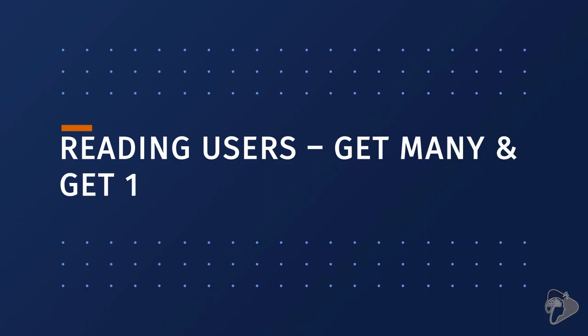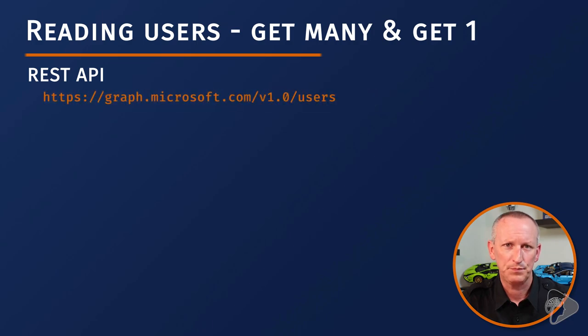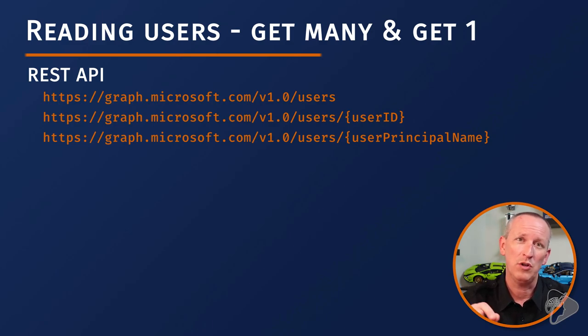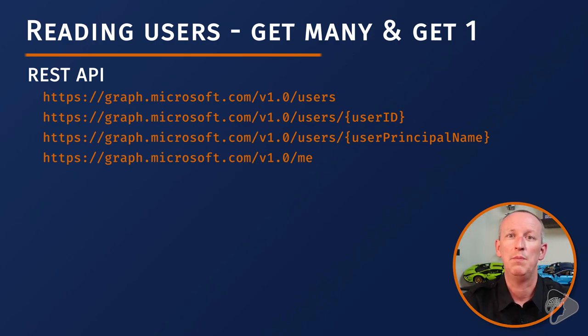This lesson, along with the next two, will be much shorter than previous lessons in this chapter. This is really just an API walk — a list of things you need to be familiar with rather than explaining how it all works. The first thing you need to be familiar with is how to get a user or a collection of users. You can obtain a list of users by submitting an HTTP GET to the users endpoint, or get a specific user using either the user's GUID, their UPN, or the special ME endpoint to get the currently signed-in user. These requests return either a single user or a collection of users, depending on which one you use.